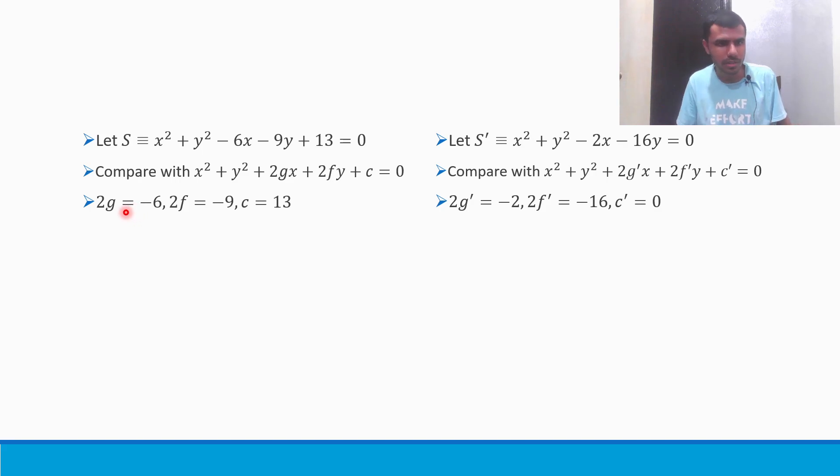Now, here beside x, what I have? 2g. Here beside x, I have minus 6. So I have 2g is minus 6. Likewise, 2f is minus 9, c is 13. Now here 2g dash is minus 2. Here, 2f dash is minus 16. And c dash is not there. What to do? Just take it as 0.